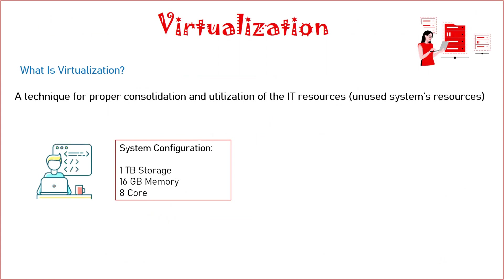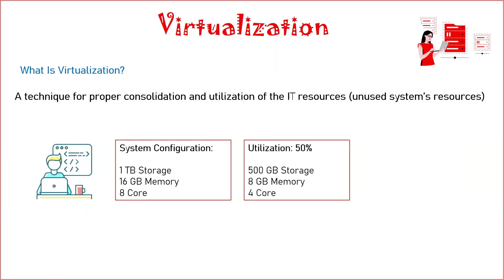Let us take the example of your own personal PC, mobile device, or personal laptop. What is the configuration of that one? Suppose it is one terabyte of storage, 16 GB of memory, and eight cores. What is the utilization of that one — in terms of storage, memory, cores, or whatever hardware configurations are there? If you compare your utilization, it would not go more than 50%.